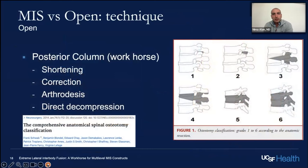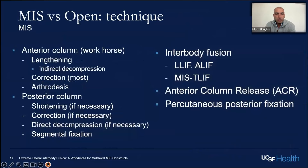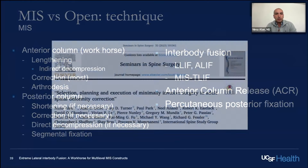The difference is in the technique. The workhorse of an open approach is posterior — just about everything comes from posterior. Shortening of the column for correction comes from arthrodesis and directed compression. Versus lateral, where the majority of work comes from lengthening of the spine through the disc space. The workhorse is lateral, essentially from anywhere above the L5-S1 disc, and an MIS TLIF can always be used as a backup if lateral doesn't work.